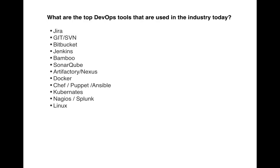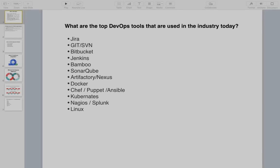Nagios and Splunk are for monitoring. The base of all these tools is Linux — if you want to be a DevOps engineer, you must know Linux, because without it, it will be really hard to deploy, debug, and manage your tools. Linux is the boss. Thank you so much for watching — happy learning. If you have any further queries, please write in the comment box.